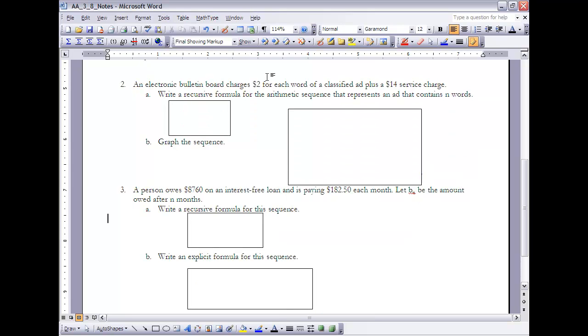So let's take a look at example 2 here. It says an electronic bulletin board charges $2 for each word of a classified ad, plus a $14 service charge. If I'm going to write this recursively, which is what part A is asking me to do, what I want to do is I want to find two things. I want to find out what's my starting value, and I want to find out what is my constant difference between terms. Well, if each word costs $2 more, that means that for each value of n, each term, each time it changes, it's going to be $2 more. So that $2 represents my constant change, my difference.